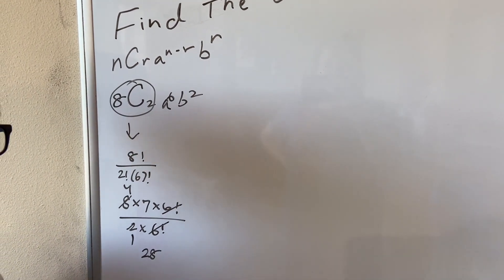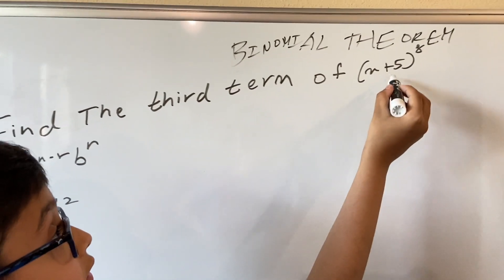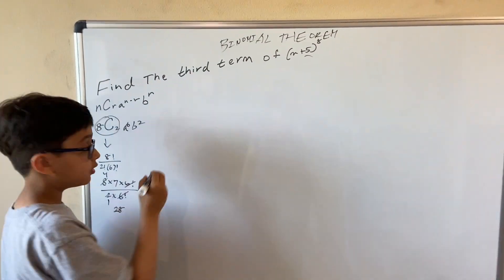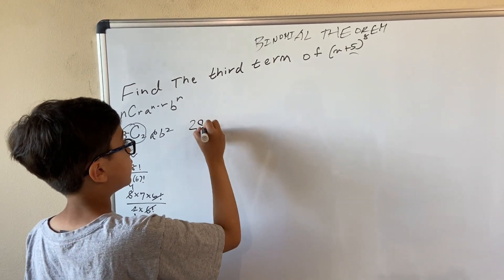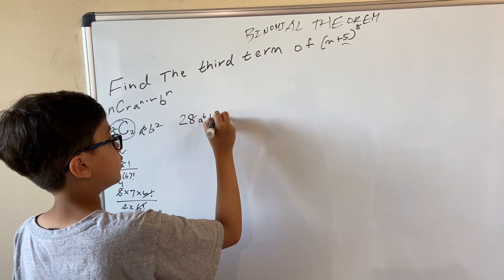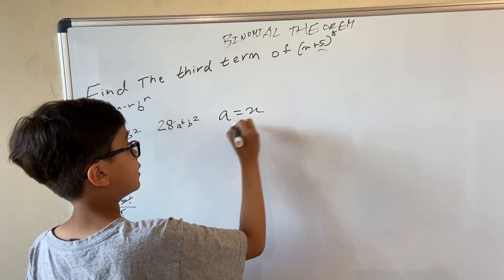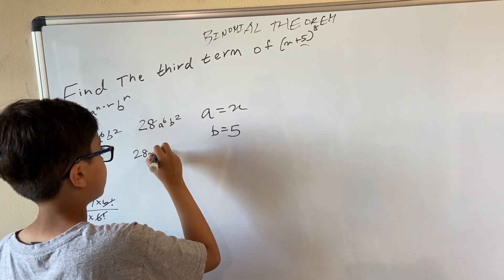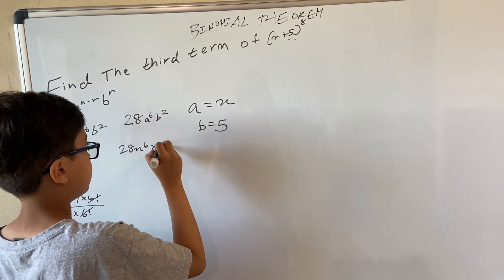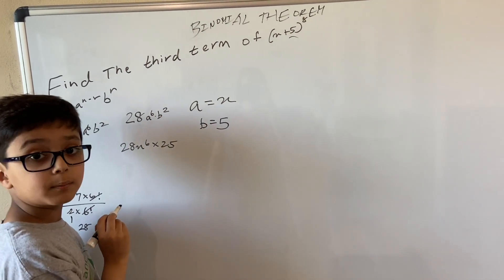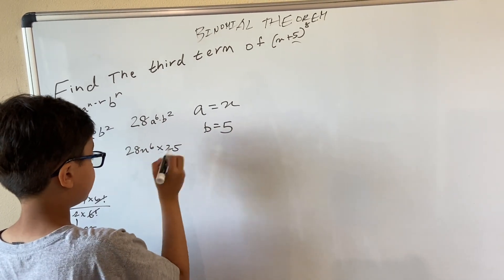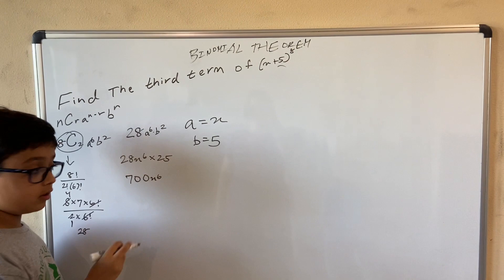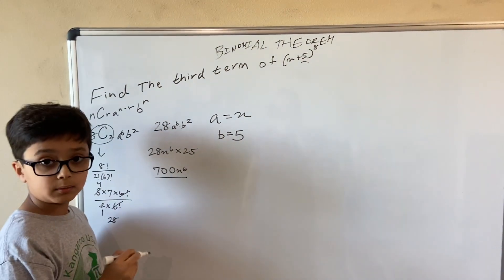Hold on, that's not it — we forgot the 5. Let's substitute the values. We can write 28 · a^6 · b^2. Now a equals x and b equals 5, so we have 28x^6 and 5 squared is 25. Multiplying 28 by 25 gives 700x^6. Our answer is 700x to the power of 6.